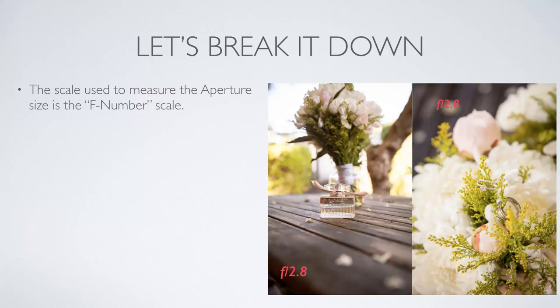The scale we use to measure aperture is the f-number scale — that's where f-stop comes in. As you can see to my right, I have some images taken for a wedding where I used f-stop 2.8 to create an image with a lot of blur and just enough light to show a softer image of the rings and the perfume.